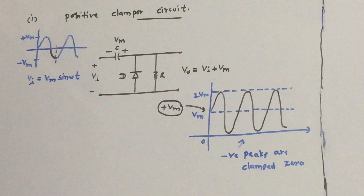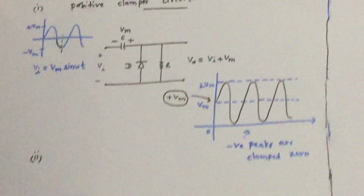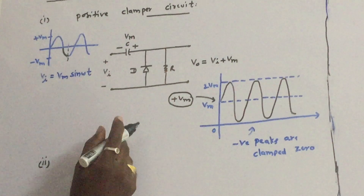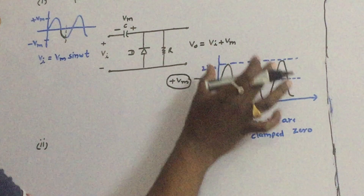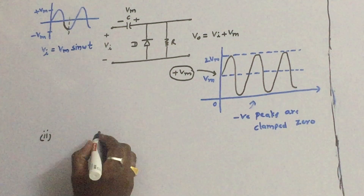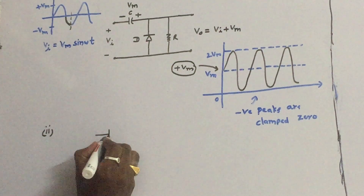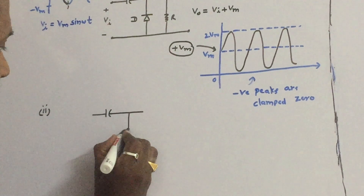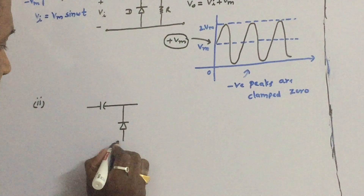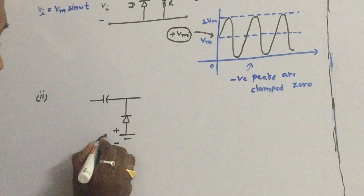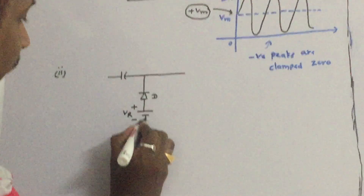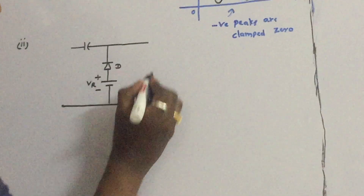Now what we will do is provide biasing to this circuit — say plus Vr and minus Vr — and see how the output changes. Let us take the capacitor and the diode, and provide a biasing polarity of Vr to this diode. This is the diode D. It is very simple to draw the output.